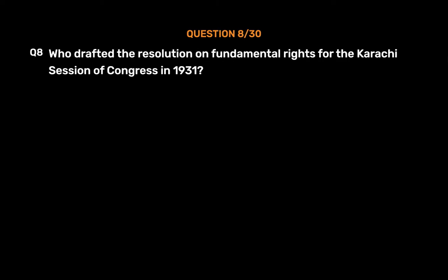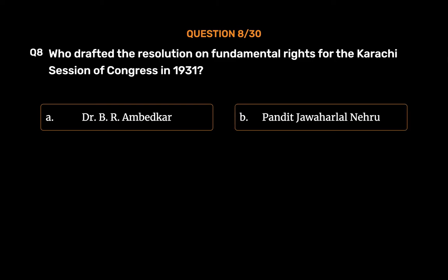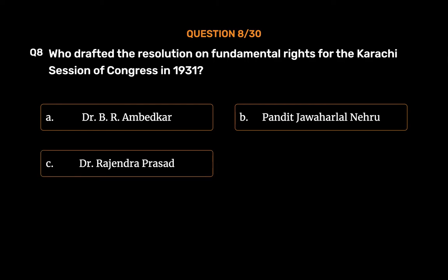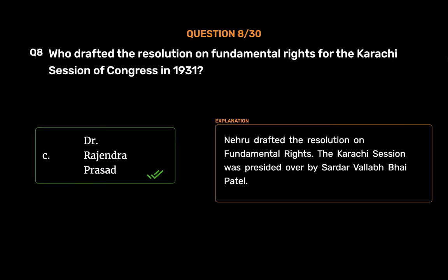Question No. 8. Who drafted the resolution on fundamental rights for the Karachi session of Congress in 1931? Option A, Dr. B.R. Ambedkar; Option B, Pandit Jawaharlal Nehru; Option C, Dr. Rajendra Prasad; Option D, Sardar Vallabhbhai Patel. The correct answer is Option C, Dr. Rajendra Prasad. Nehru drafted the resolution on fundamental rights. The Karachi session was presided over by Sardar Vallabhbhai Patel.